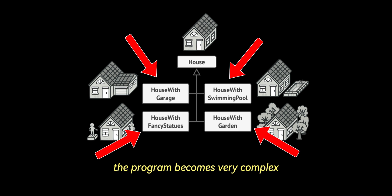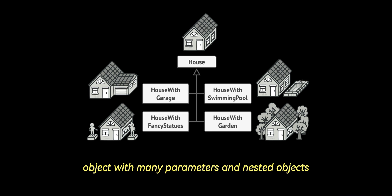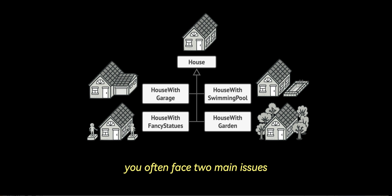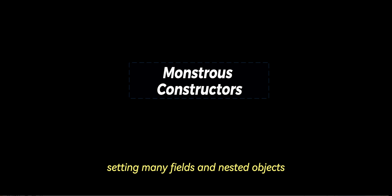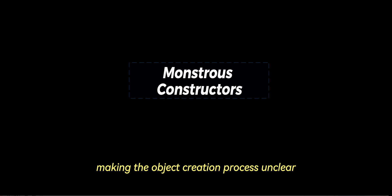The program becomes very complex by creating a subclass for every possible configuration of an object. So when constructing a complex object with many parameters and nested objects, you often face two main issues. Number one is monstrous constructors: the initialization process involves setting many fields and nested objects, leading to constructors with an overwhelming number of parameters. Managing such constructors becomes difficult, and their usage across the codebase gets scattered, making the object creation process unclear and hard to maintain.